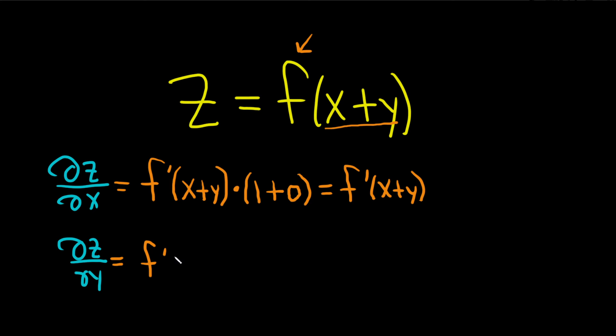we take the derivative of the outside, evaluate it at the inside, and then times the derivative of the inside. So the derivative of x is 0, and the derivative of y is 1. So we get the same exact answer, f prime, evaluated at x plus y.